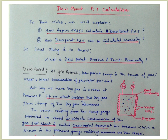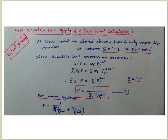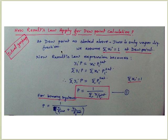This also applies for dew point calculation for ideal gases or vapors. At the dew point, there is only vapor — the vapor has just started condensing, meaning liquid formation has just begun. At the start of this condensation process, the liquid fraction is insignificant. Therefore, we consider Sigma Xi equals 1 at the dew point. This is our assumption for dew point calculation using Raoult's law for ideal gases and vapors.